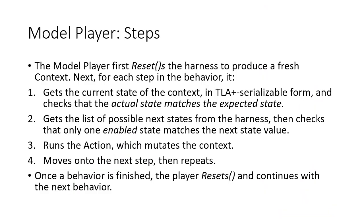After route solving, the model player first resets the harness to produce the fresh context. Then, for each step in the behavior, it gets the current state of the context in TLA+ serializable form and checks that the actual state matches the expected state - this catches if any actions don't produce the future state they promised. The second step is to get the list of possible next states from the harness and check that only one enabled state matches the next state value. Third, we run that single action which mutates the context, then move on to the next step. Once the behavior is finished, the model player resets and continues with the next behavior.